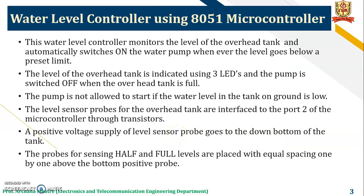This water level controller monitors the level of the water head tank and automatically switches on the water pump whenever the level goes below a preset limit. The level of the water head tank is indicated using 3 LEDs, and the pump is switched off when the overhead tank is full. The pump is not allowed to start if the water level in the ground tank is low.